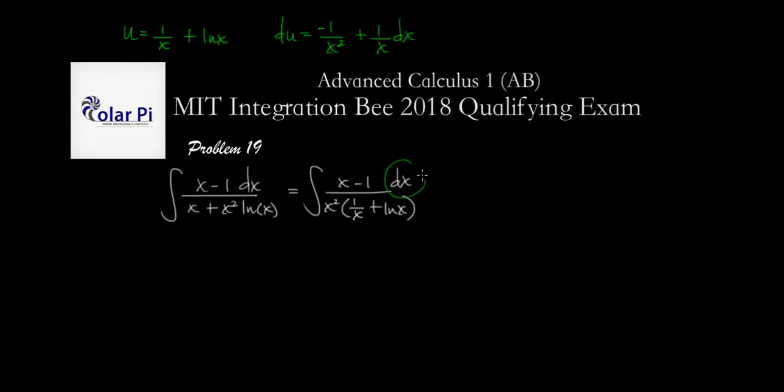Now, since we want to substitute for this dx here, we'd like to solve for dx in this expression. Well, first, let's get common denominators for these two guys. So that would mean that we have du equal to negative 1 plus x, divided by x squared, and then of course times dx.